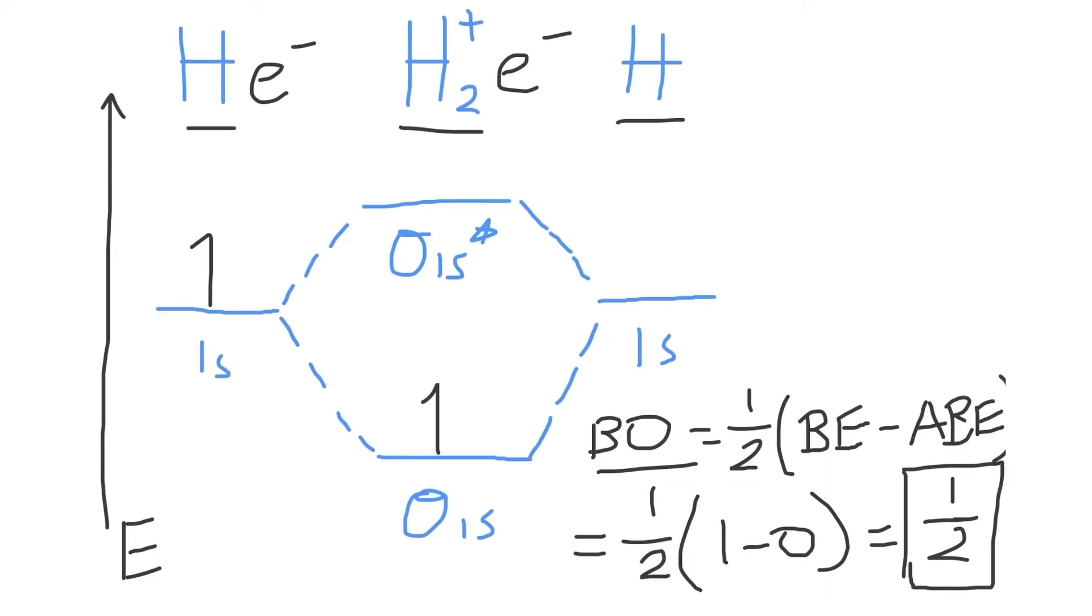And this bond order makes sense. A bond order of one half correlates to half of a single bond. And because we have one electron, we can see in the H2 plus molecule that there'll be one electron that is shared between the two atoms. In the H2 plus molecule, we can see that there is half of an electron pair, which directly connects to your bond order of one half.